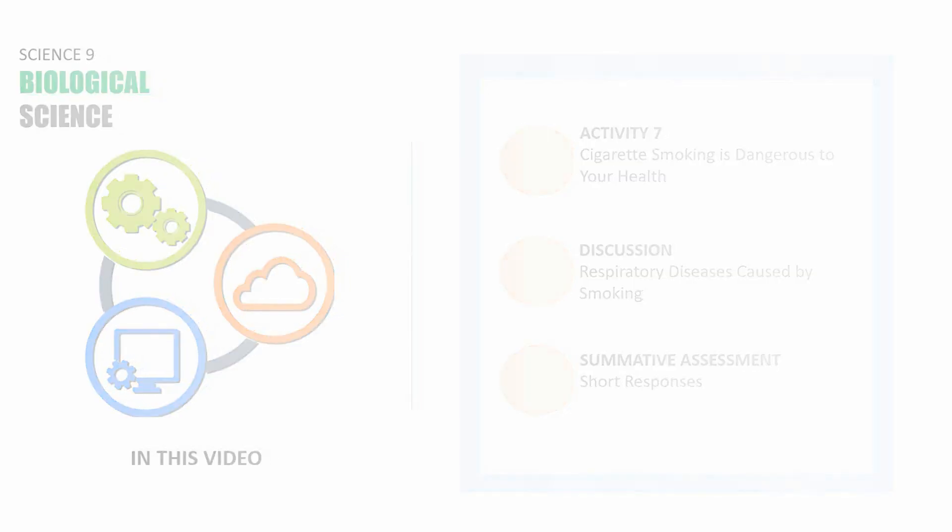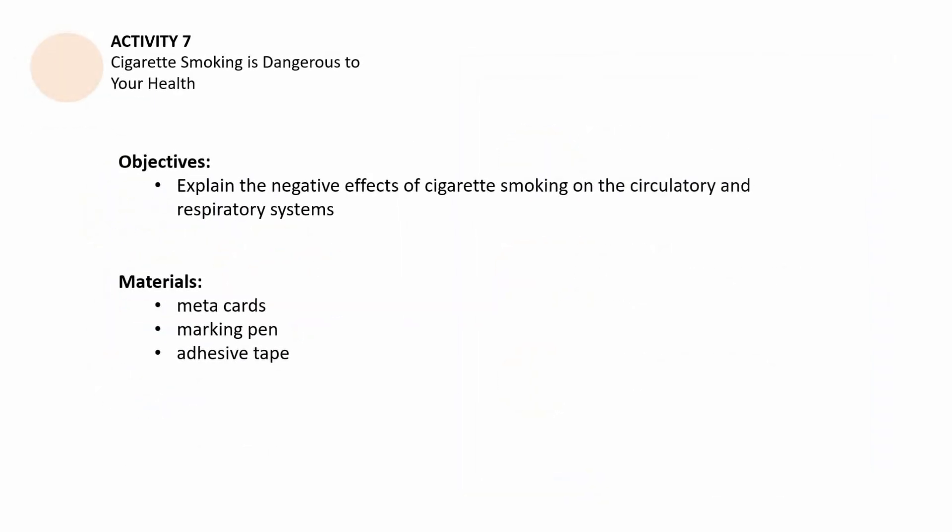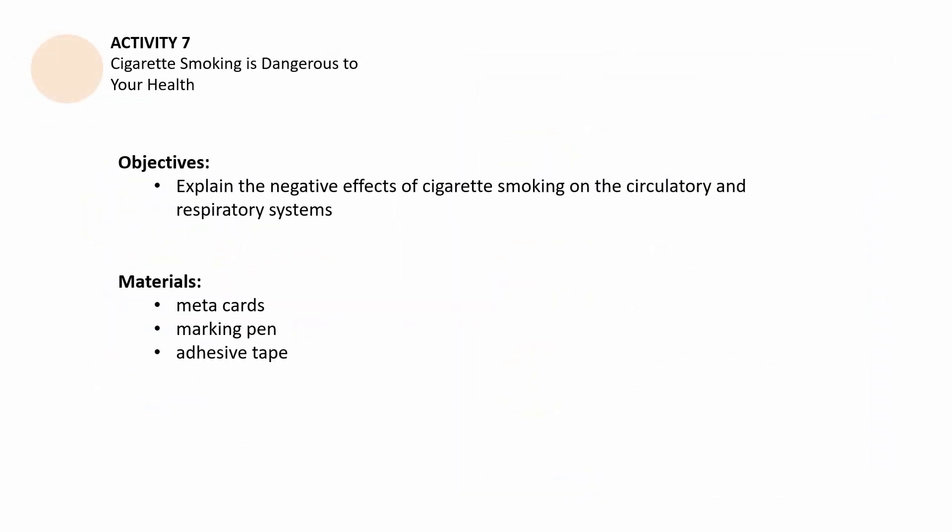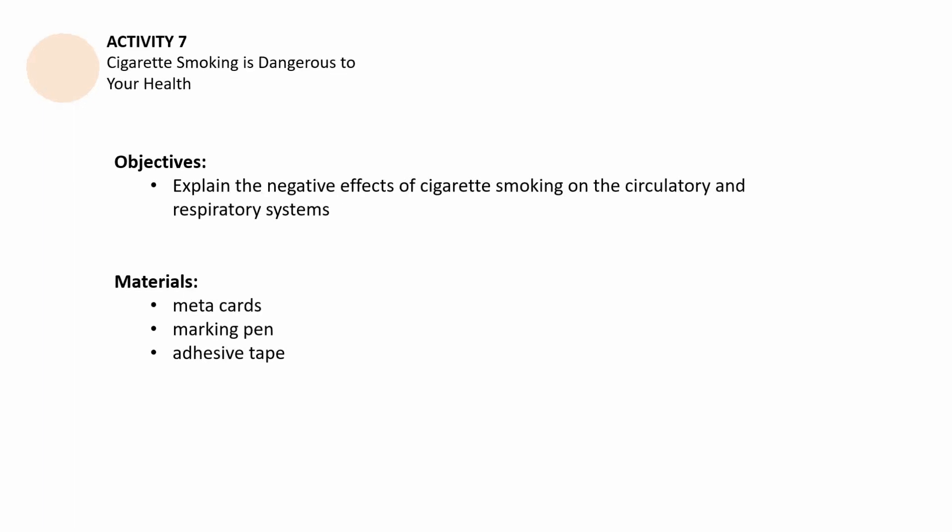For the first part, activity number seven, we have the following objectives. We need to explain the negative effects of cigarette smoking on the circulatory and respiratory systems. Since this is asynchronous and a video lesson, you just have to do what I am going to tell you.